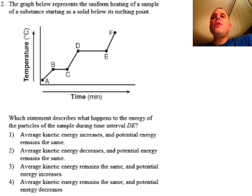Now here's question two. The graph below represents the uniform heating of a sample of a substance starting as a solid below its melting point. So here it's a solid. This would be its melting point. So it's beginning at A and A is a solid already much below its melting point. Here's the question: Which statement describes what happens to the energy of the particles of the sample during time interval DE?